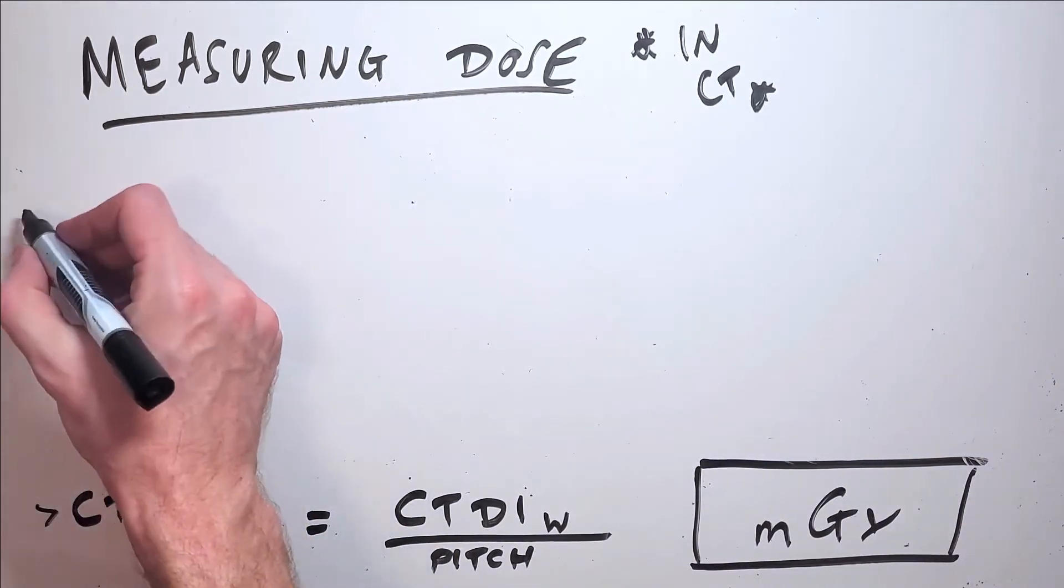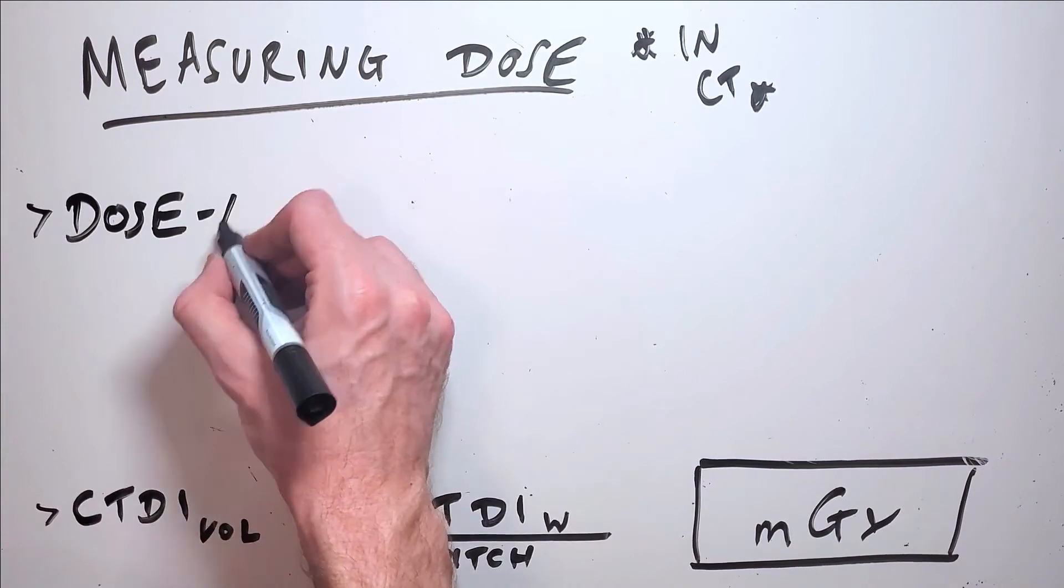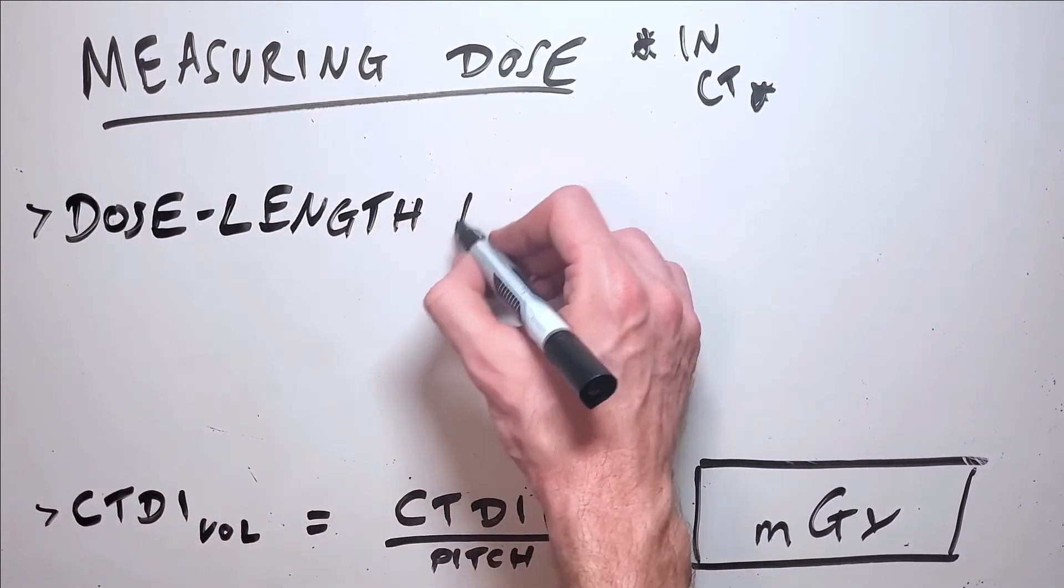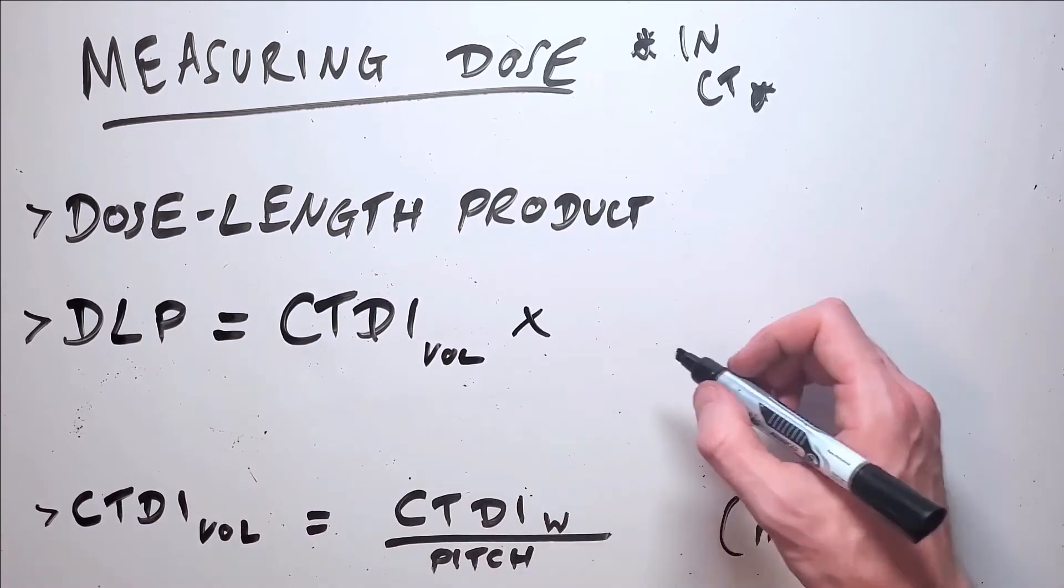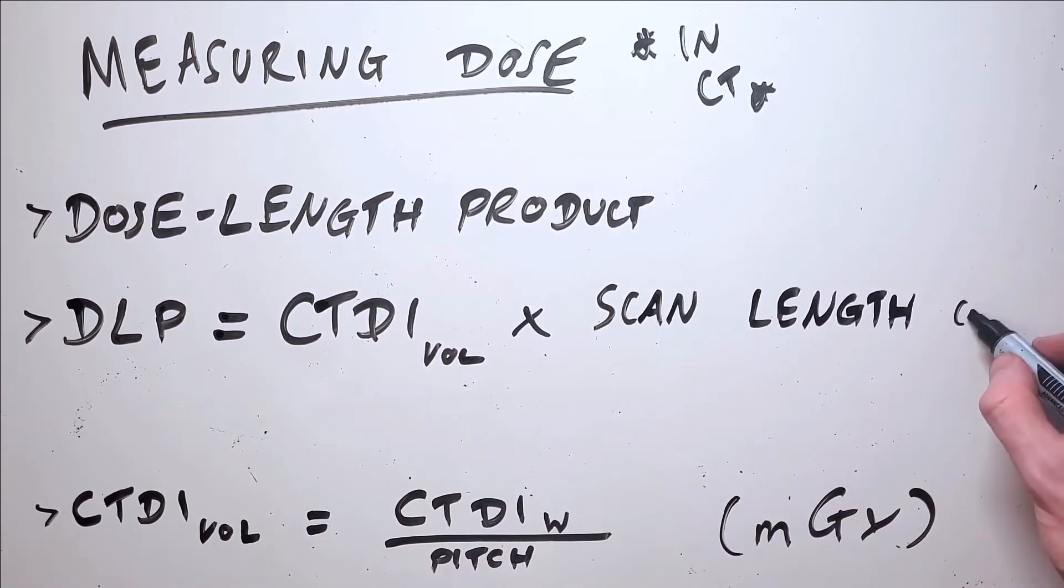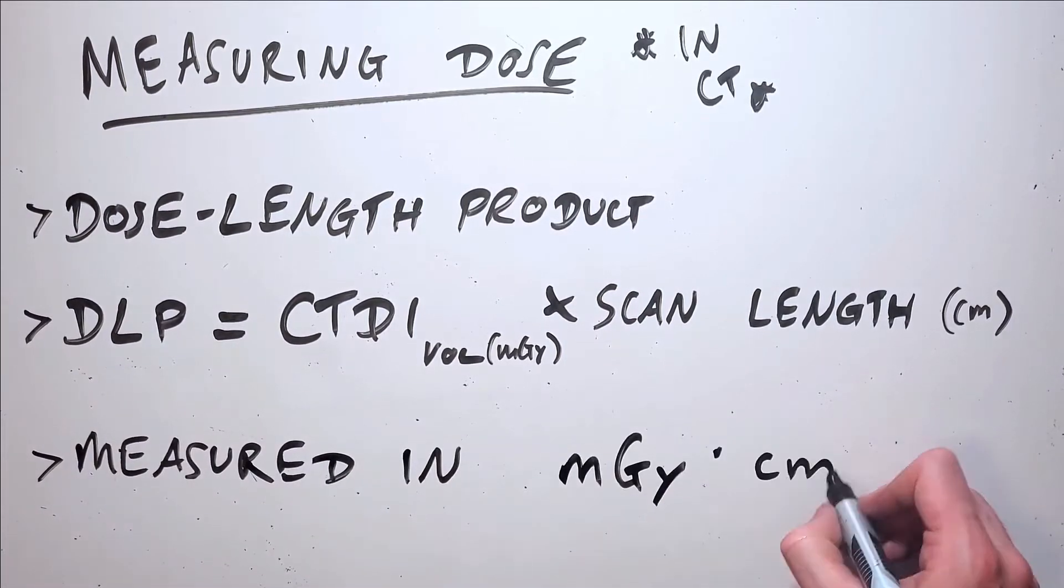As well as assessing the overall dose passing through a patient during the scan, we also need to consider the z-axis length of the scan, which is assessed in the dose length product or DLP. This is simply the CTDI volume multiplied by the length of the scan in centimeters, so the units are milligray centimeters.